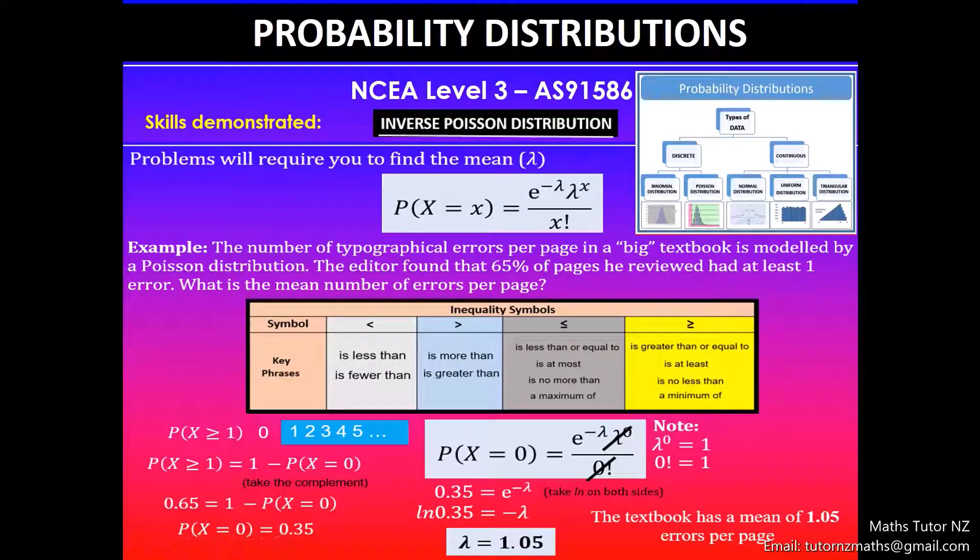Greetings everyone. In this video we'll be looking at NC Level 3 probability distributions achievement standard. In my previous videos I've already covered binomial and Poisson distributions for finding unknown probabilities.